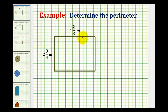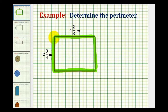We want to determine the perimeter of this rectangle. The perimeter of any shape is the distance around the shape, which we see here highlighted in green. So even though there are formulas to determine the perimeter of various polygons, as long as we know what the perimeter is, we can just add the lengths of all the sides to determine the perimeter.